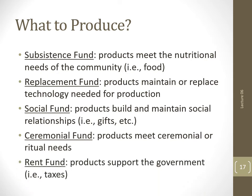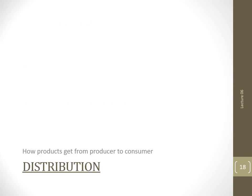Finally, some societies also require a rent fund — goods produced for the support of political superiors. Think taxes. The rent fund only exists in economies of societies that have political superiors, so egalitarian economies lack this fund. Having produced the goods a society needs or wants, those goods must still be distributed to the people who will use them.